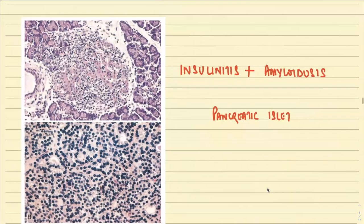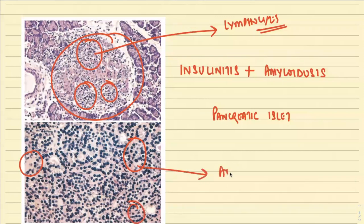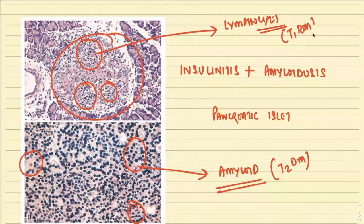Looking at the pancreatic islet diagram, you can see infiltration by lymphocytes — characteristic of type 1 diabetes mellitus. In the background, there is deposition of amyloid classically seen with Congo red stain. Amyloid deposition is classical for type 2 diabetes mellitus, whereas lymphocyte infiltration is more commonly seen in type 1 diabetes mellitus.